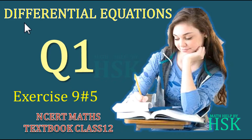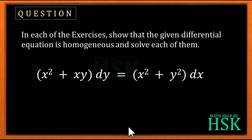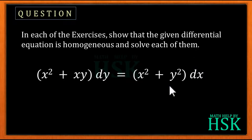Hello friends, in this video I am going to take question number one of Exercise 9.5 from the chapter Differential Equations of NCERT Maths textbook Class 12. The question asks us to show that the given equation is homogeneous and solve each of them. So we have to prove it is a homogeneous equation and then solve it as a homogeneous differential equation.